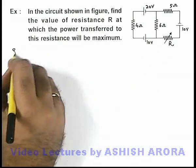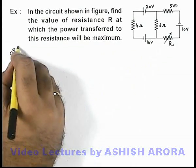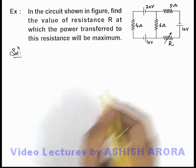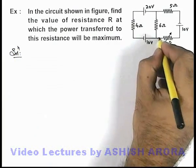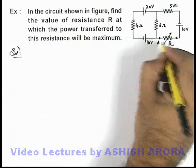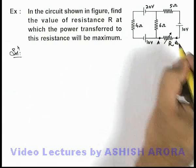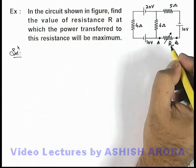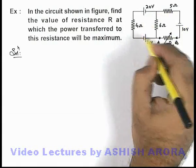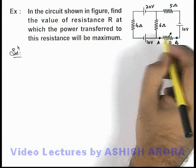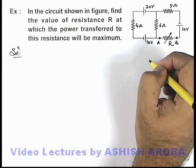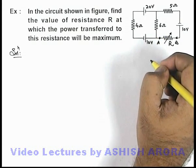Now in this situation, if we just have a look at the circuit carefully, we can remove this resistance R across the terminals A and B, and transform the remaining circuit between the points A and B by a single equivalent battery using Thevenin's method.